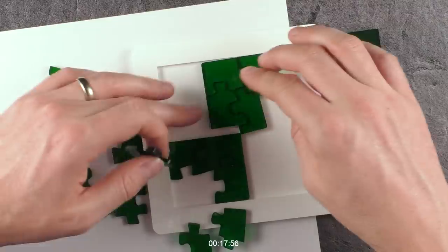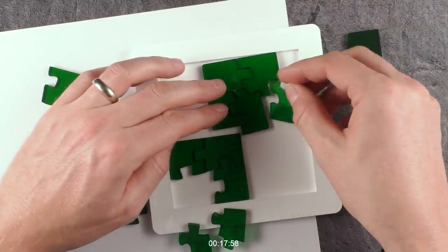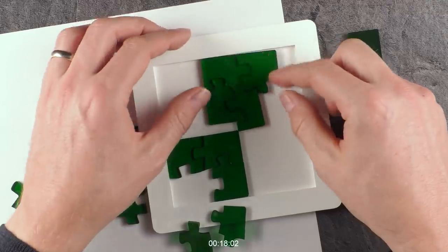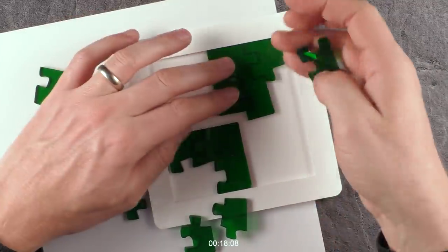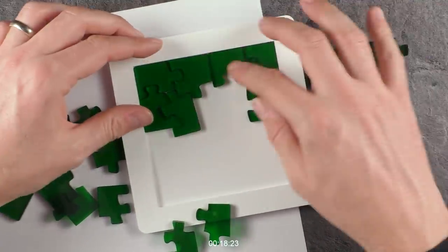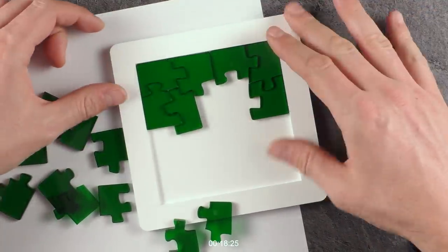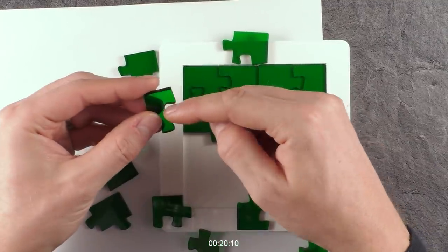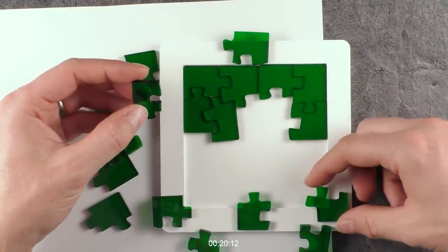Oh, this piece fits also here. Maybe these belong together. Problem is, I also don't know if it's upside down, maybe, or not. Maybe like this. I don't know. I mean, on these round pieces, there can only fit another round piece inside here. There is no other possibility.